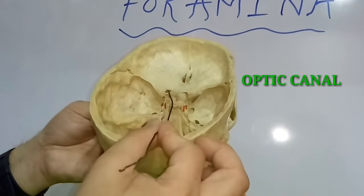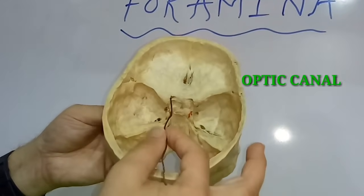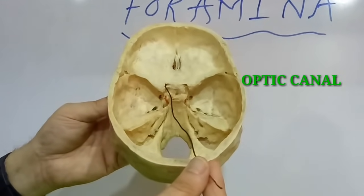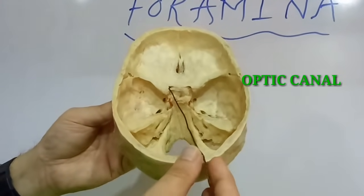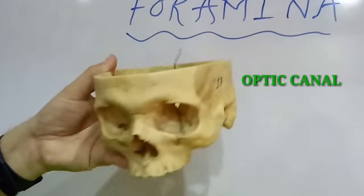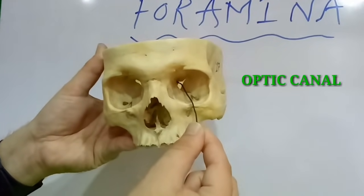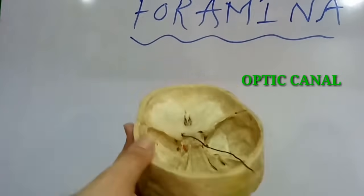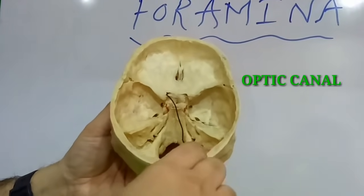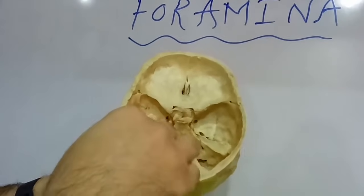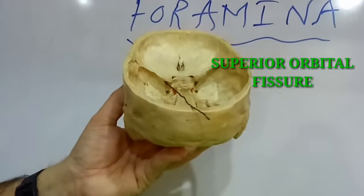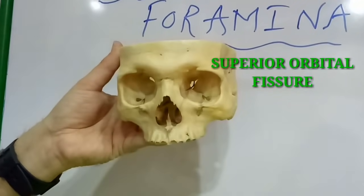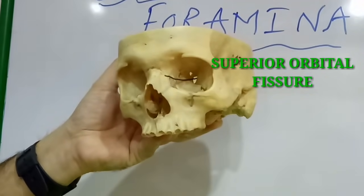This is the optic canal. The optic canal transmits the optic nerve, which is the second cranial nerve, passing through the optic canal or optic foramen. This is the superior orbital fissure, which can also be seen from the orbit.